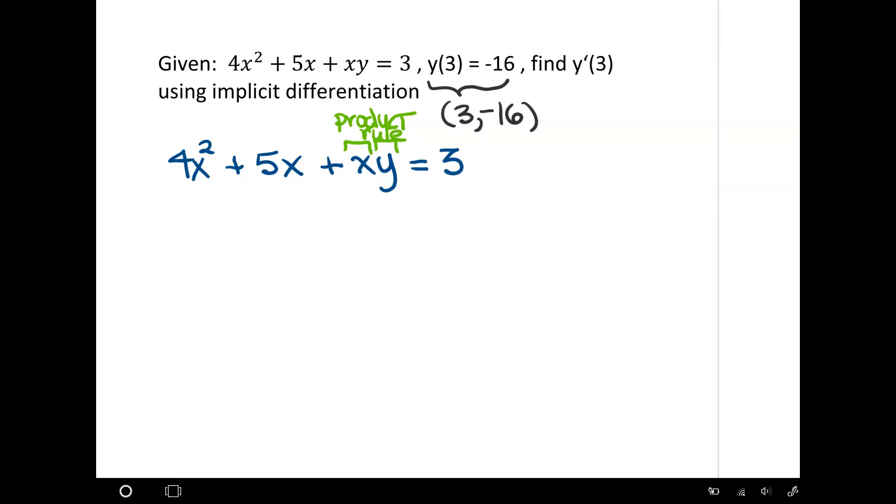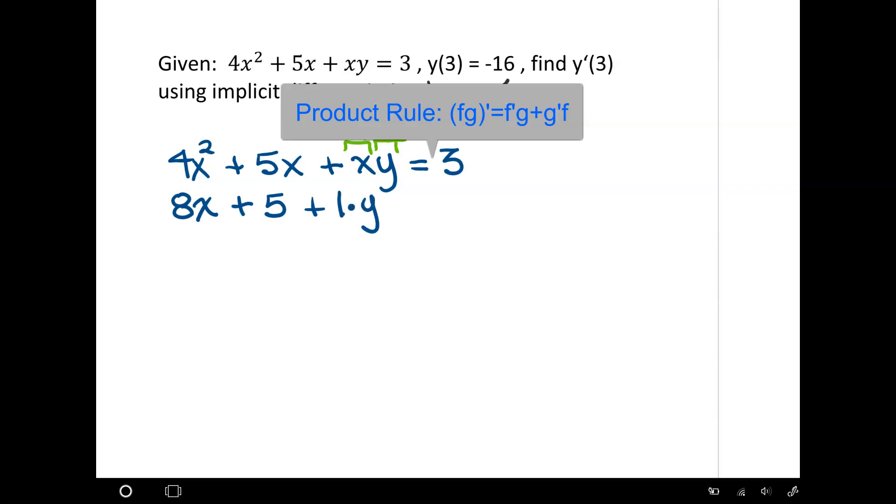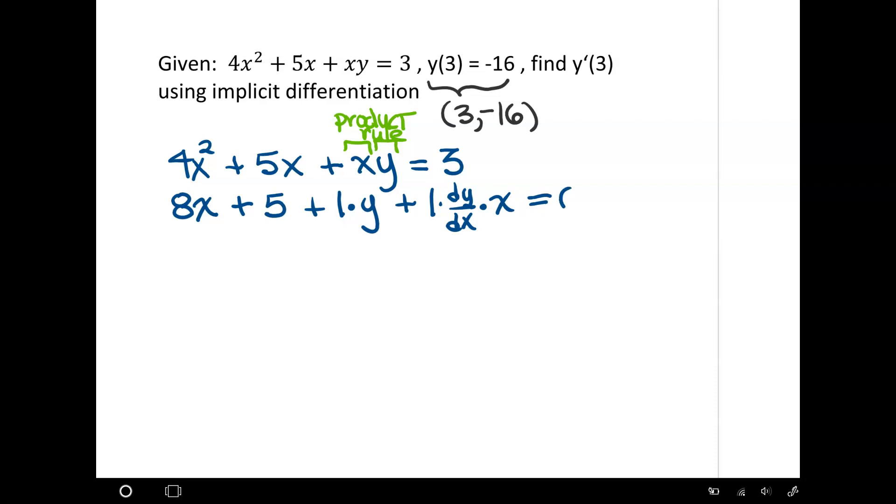The derivative of 4x² is 8x. The derivative of 5x is 5. And then here begins our product rule: the derivative of x is 1 times y plus the derivative of y, which is 1, but because it's a y term, we have to put a dy/dx factor multiplied by x. All of that is the derivative of the xy term equals, and the derivative of the constant 3 is 0.